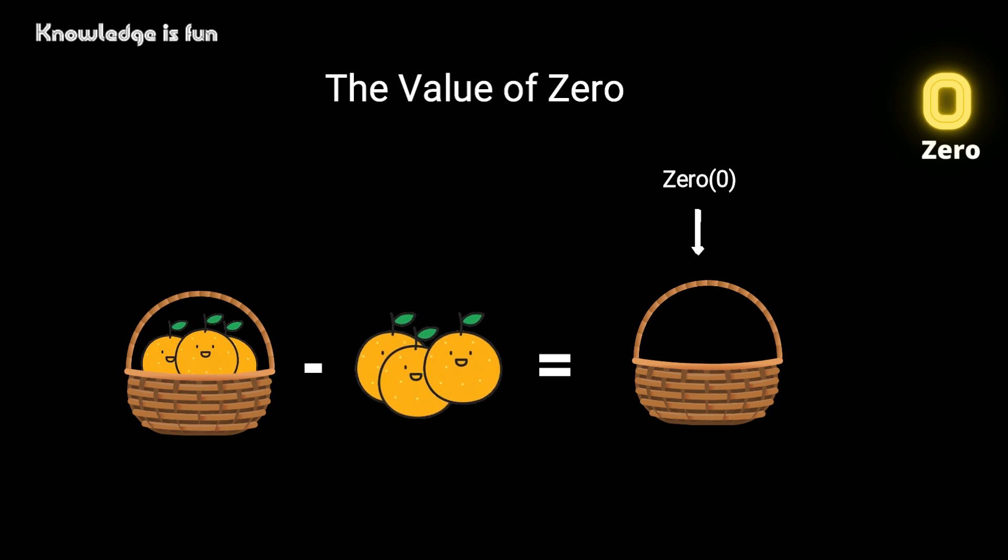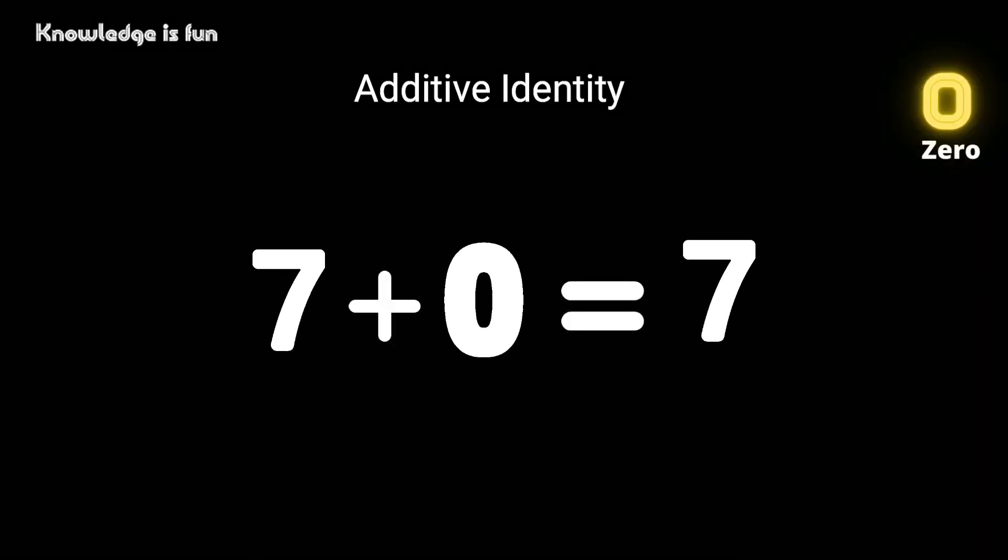Zero can also be seen as an additive identity. Now what do I mean by an additive identity? For example, when you add zero to a number, you would get the same number. When you have seven plus zero, it gives you seven.